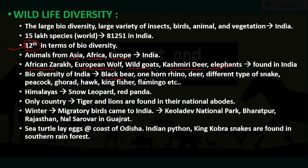We also have black bear, one-horned rhino, deer and different types of snakes. Peacocks, hornbill, hawk, kingfisher and flamingo are found in India. If you go to the north in the Himalayas, we have snow leopards and red panda. In our country, tiger and lions have their national conservation awards. In winter season, we find many migratory birds that come to India, such as at Keoladeo National Park at Bharatpur, Rajasthan, and Nalsarovar in Gujarat.